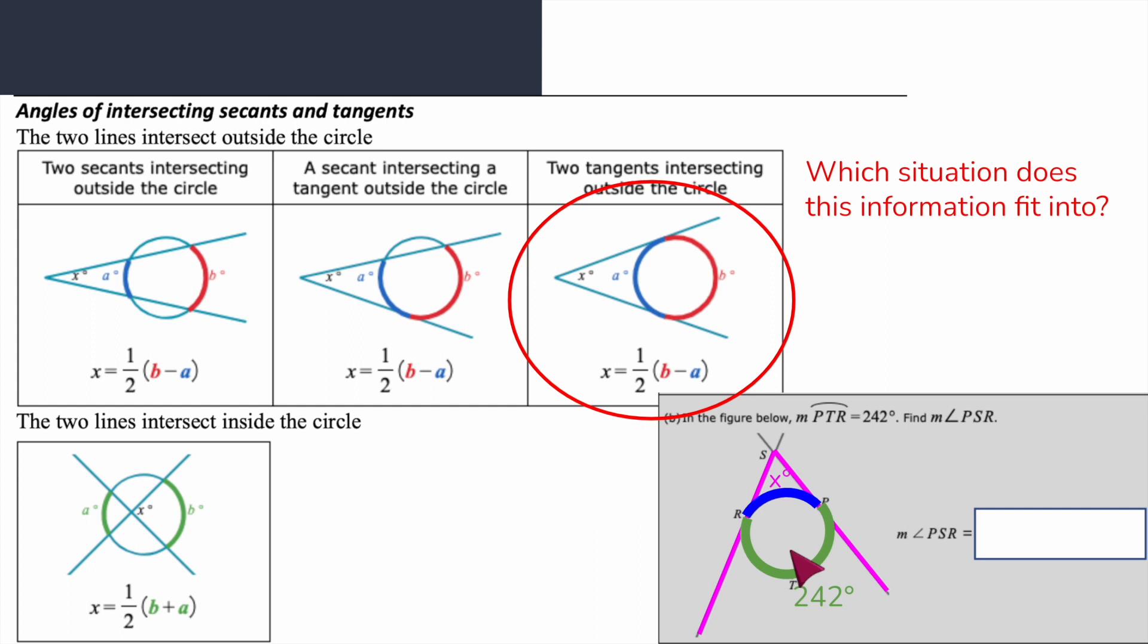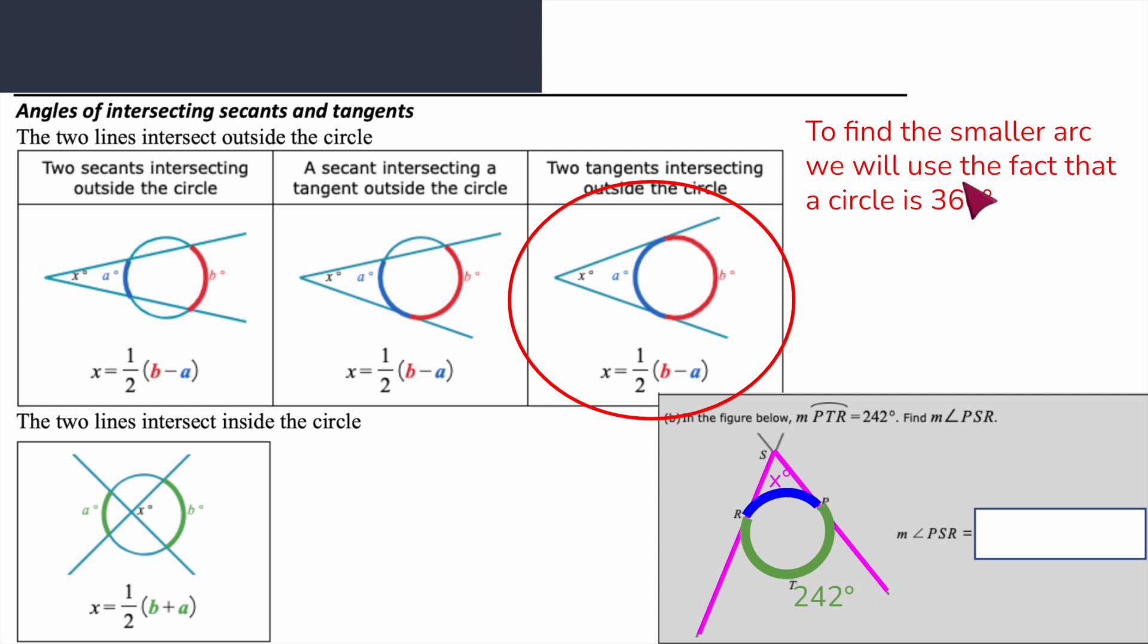They're only giving us one piece of information but really they're giving us two, because we know that all the way around the circle is 360 degrees. If they're giving me this major arc and I need to know this other little piece, I'm going to subtract from that 360 degrees. So 242 plus RP equals 360 degrees. If I subtract the 242, that tells me what's left over for just this little arc, which is 118 degrees.